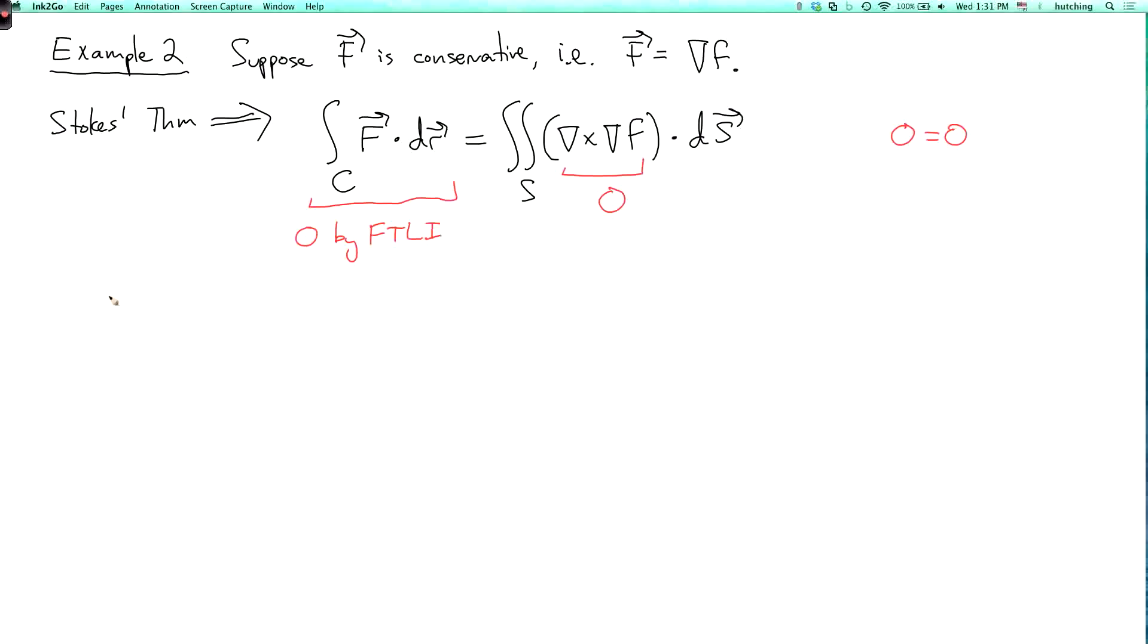Now, there's a nice converse here. So, this is the theorem that if f is defined at all of R three, and the curl of f is zero, then f is conservative, and the proof, well, we know that it's enough to show